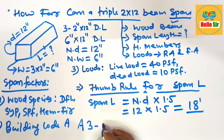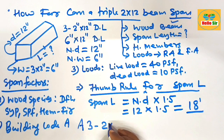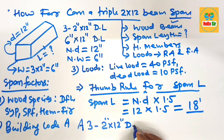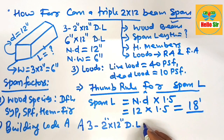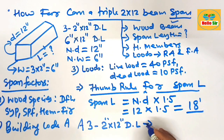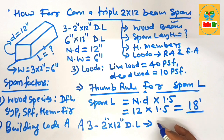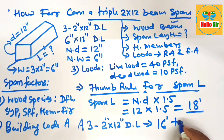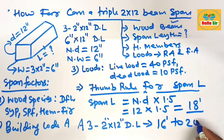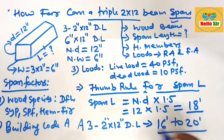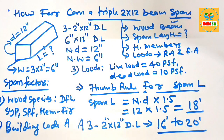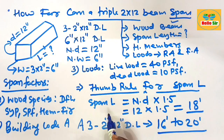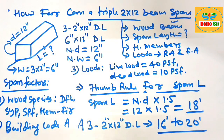So a triple 2 by 12 dimensional lumber edge beam can span a maximum distance of about 16 feet to 20 feet in length. This is the span length for a triple 2 by 12 wood beam. Thank you.